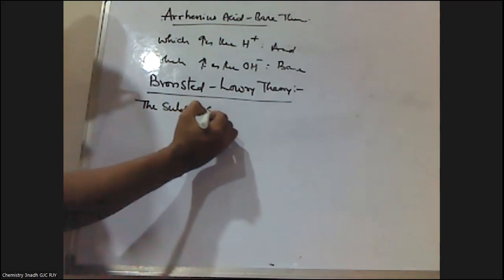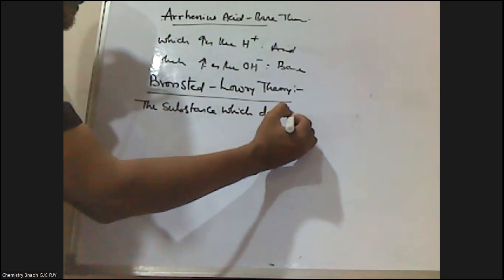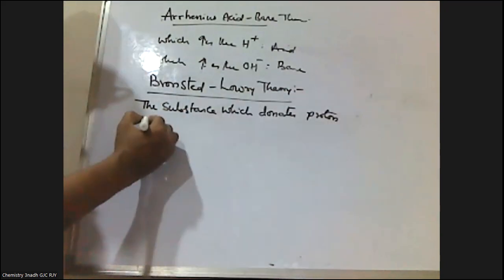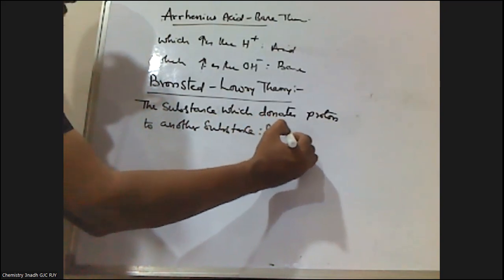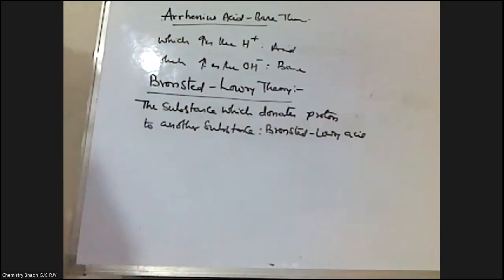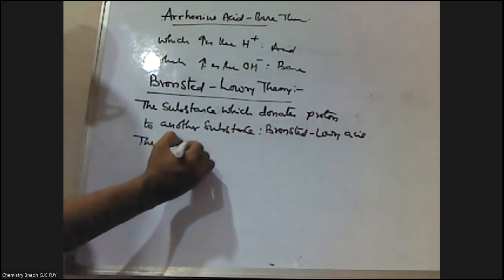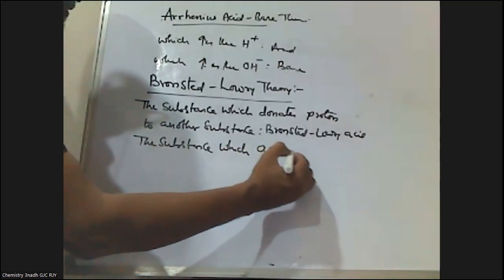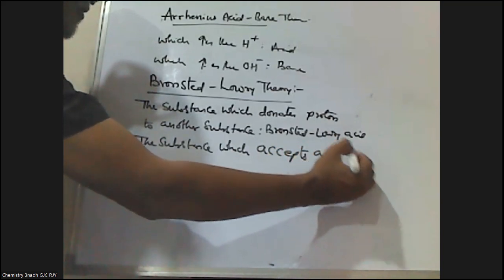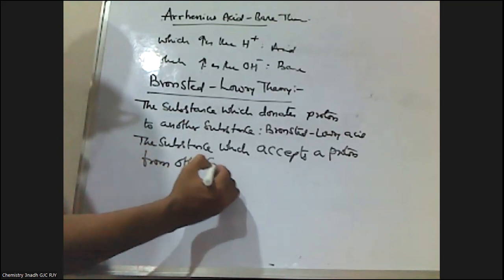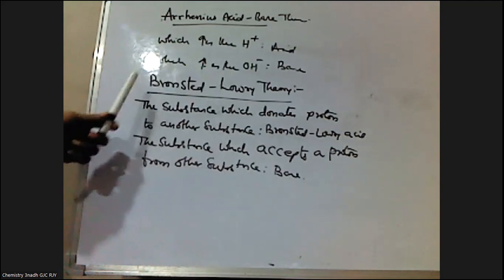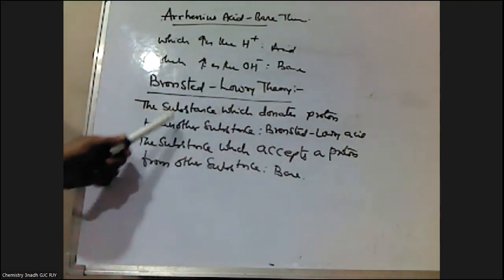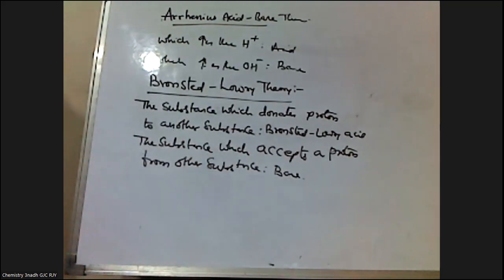According to the Bronsted-Lowry Theory, the substance which donates a proton to another substance is called a Bronsted-Lowry acid. The substance which accepts a proton from another substance is called a Bronsted-Lowry base. So, a proton donor is an acid and a proton acceptor is a base.